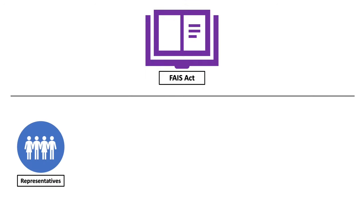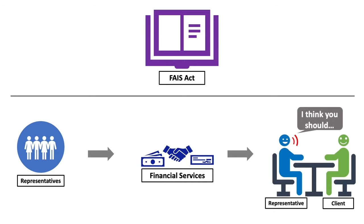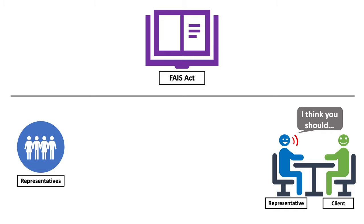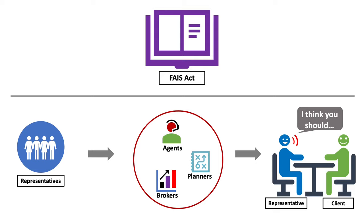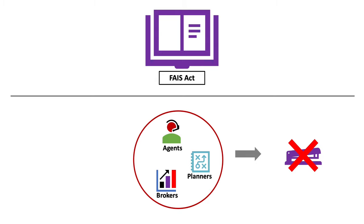Next, we have Representatives, or Reps for short, who are employed by FSPs to sell financial services to clients. For purposes of the FACE Act, Reps include call center agents, brokers, consultants, financial planners, financial advisors, investment advisors, and insurance agents. It's important to note that Reps are not people who provide clerical, technical, administrative, legal, or related services — this relates to instances where advice is not given to a client.